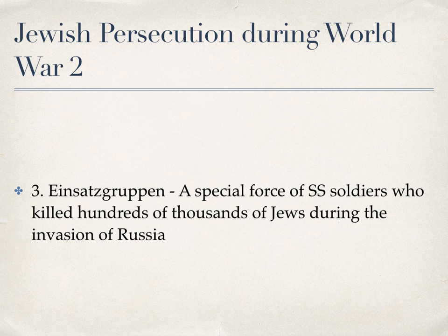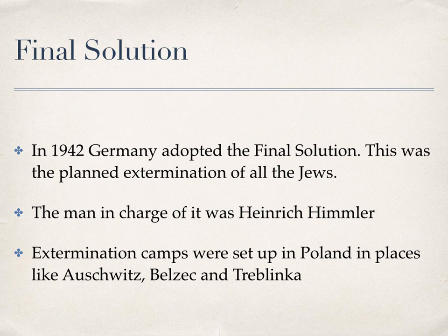The next part of the persecution of the Jews in World War Two came from a group called the Einsatzgruppen — a special force of SS soldiers who killed hundreds of thousands of Jews during the invasion of Russia in Operation Barbarossa.